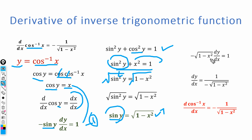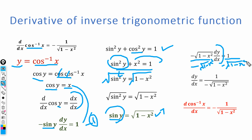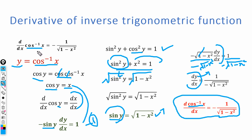Substituting sine y with the square root of 1 minus x squared in equation number 1, we have minus the square root of 1 minus x squared times dy by dx is equal to 1. Dividing both sides by minus the square root of 1 minus x squared, this term cancels and dy by dx is equal to 1 divided by minus the square root of 1 minus x squared. Since y is equal to cos inverse of x, we have d by dx of cos inverse of x is equal to minus 1 over the square root of 1 minus x squared. This is the final solution.